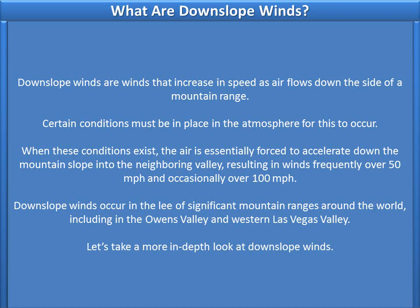Downslope winds occur in the lee of significant mountain ranges around the world, including in the Owens Valley and western Las Vegas Valley. Let's take a more in-depth look at downslope winds.